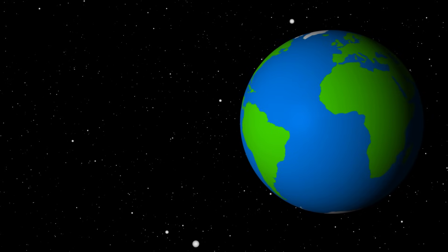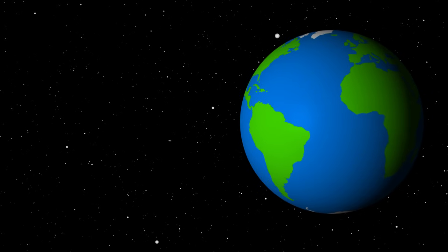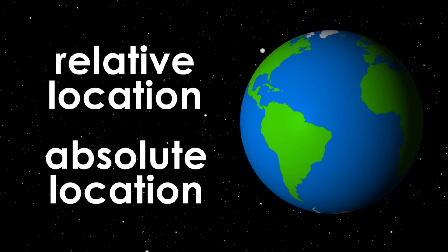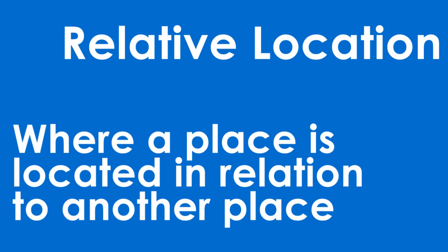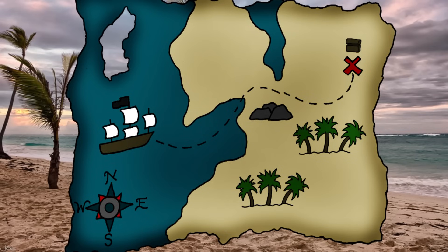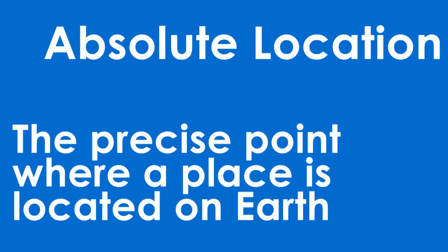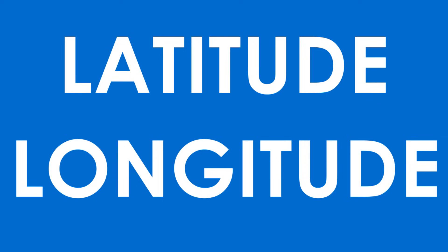To pinpoint locations on Earth, geographers use either relative location or absolute location. Relative location is where a place is located in relation to another place. For example, the treasure is located around the rock, through the palm tree forest and near the open clearing. Absolute location is the precise point where a place is located on Earth.